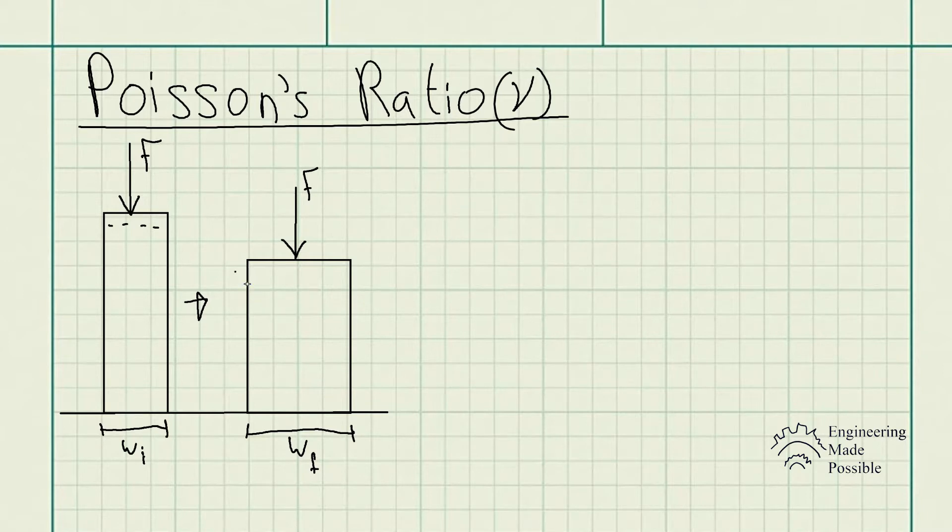So we actually have two axes here. We have the longitudinal axis and the lateral axis. We already know when it comes to the strain, we're able to calculate it, which is the change in length divided by the original length, or essentially a deformation divided by the length. And this was for the longitudinal axis.